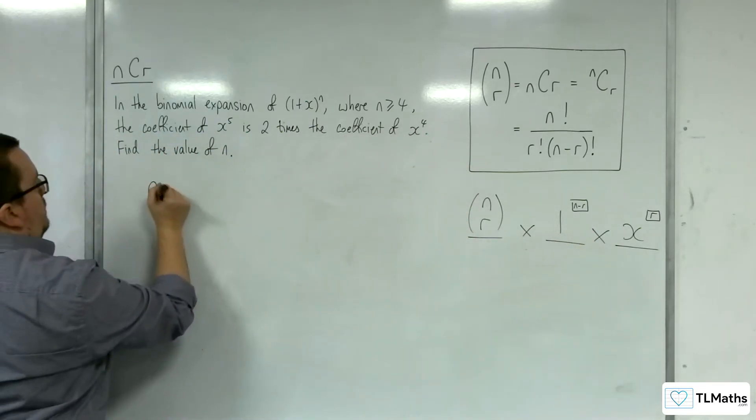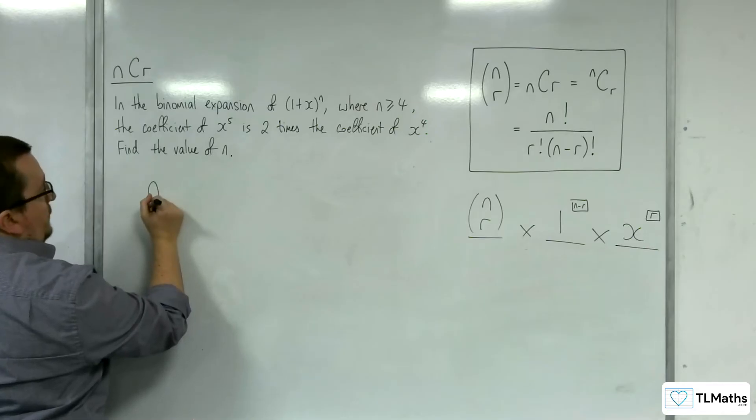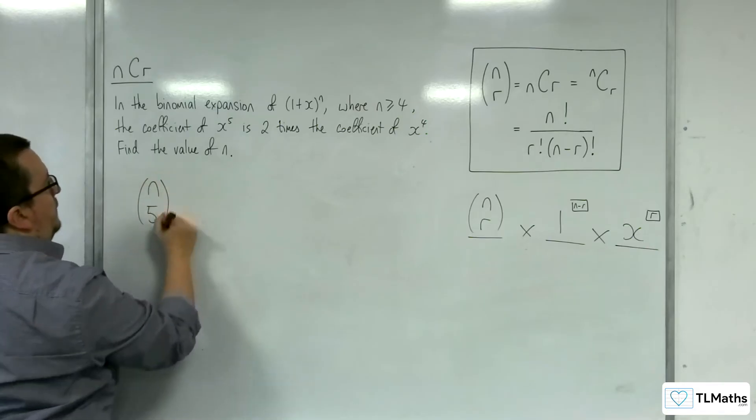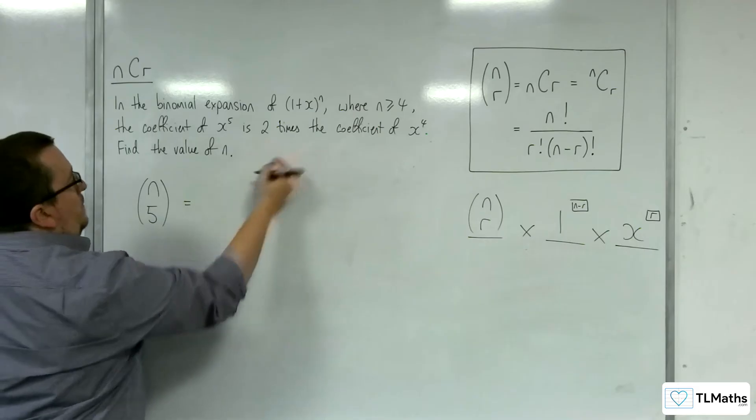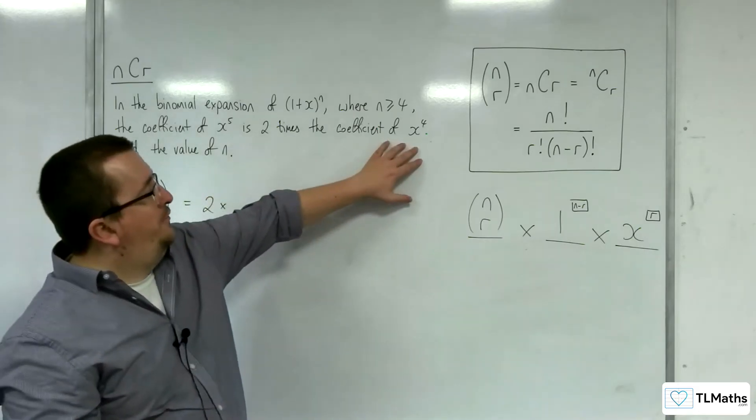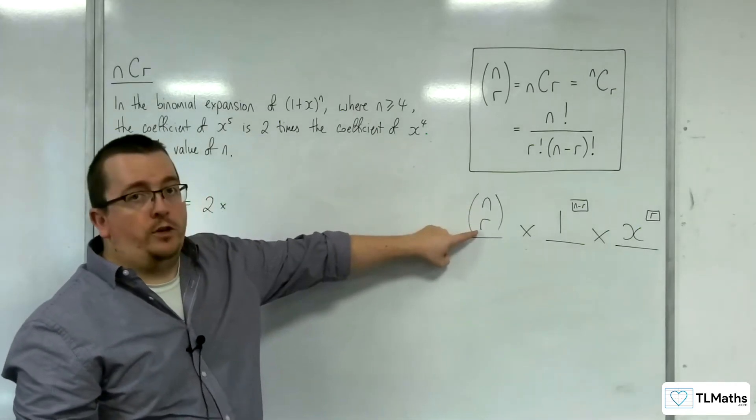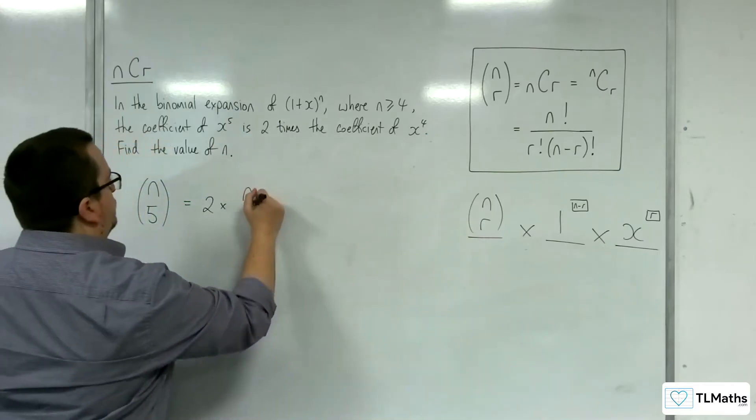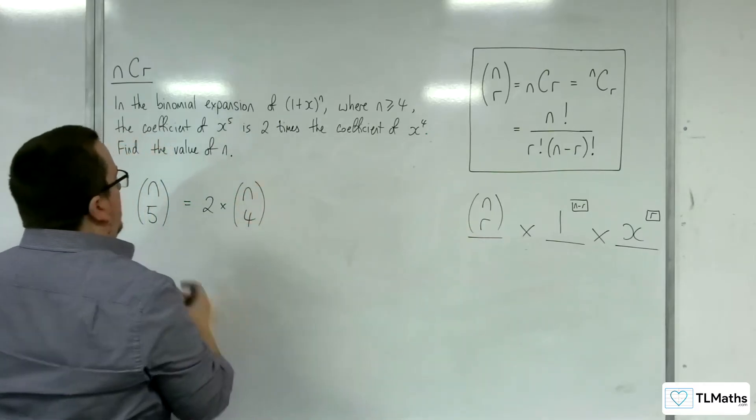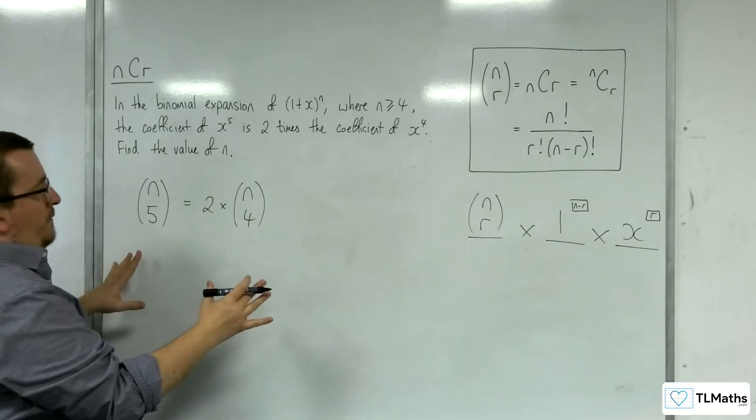So the coefficient of x to the 5 is n choose 5, and that is 2 times the coefficient of x to the 4, which would just be n choose 4. So this is the equation I now have.